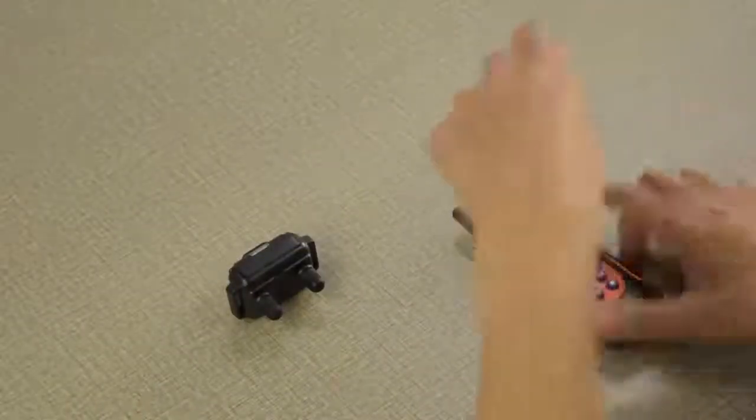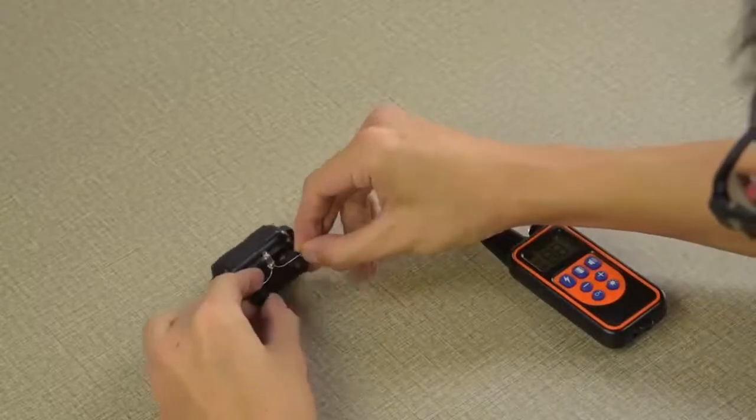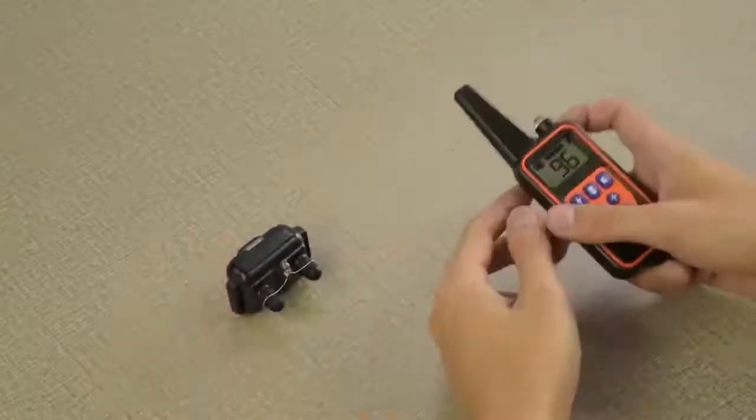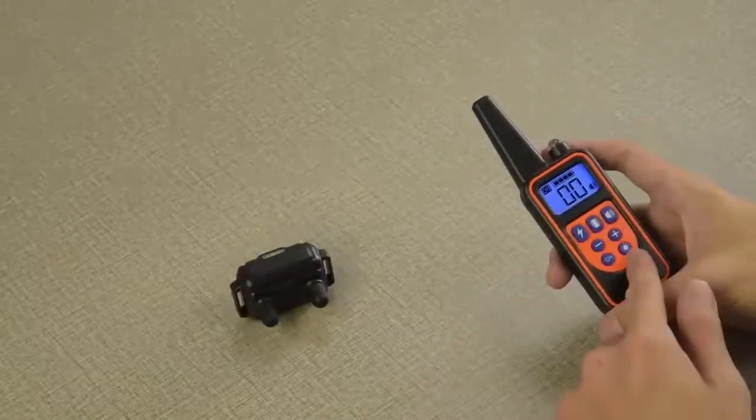Test the shock function. Take out the test bulb and put it on the receiver's contact point. Press the shock button, making sure the level is above 1. The test bulb will light up.